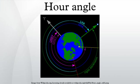In astronomy, hour angle is defined as the angular distance on the celestial sphere measured westward along the celestial equator from the meridian to the hour circle passing through a point. It may be given in degrees, time, or rotations depending on the application.